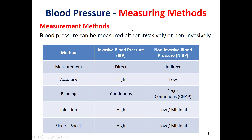In this lecture we adopt classification based on whether measurement is invasive or non-invasive. Invasive blood pressure is considered a direct method of measurement, which gives higher accuracy and continuous reading. Non-invasive blood pressure is considered an indirect method of measurement, and thus has lower accuracy.